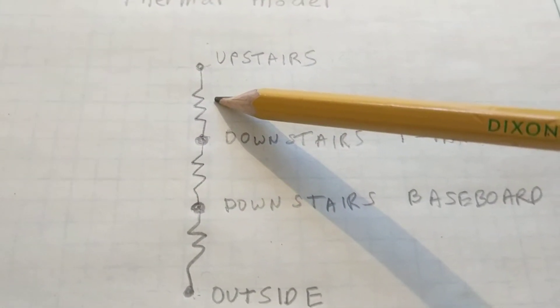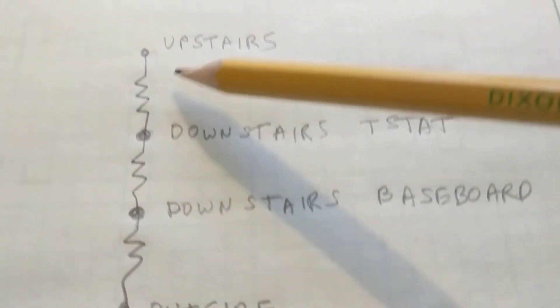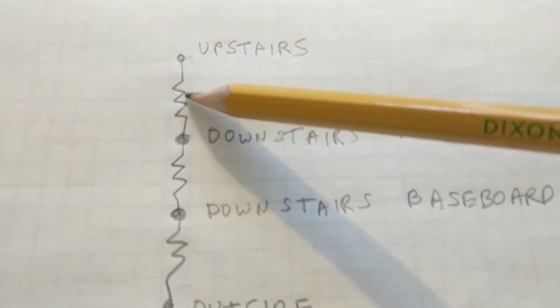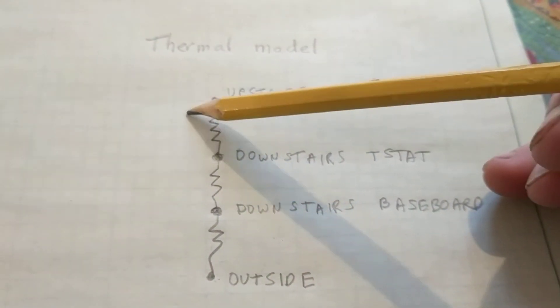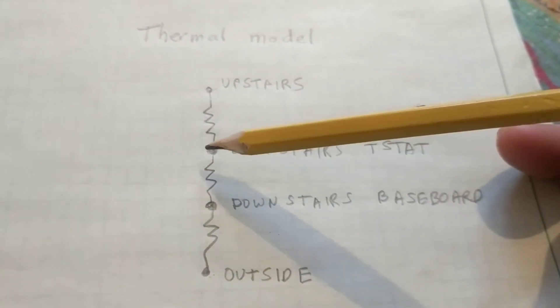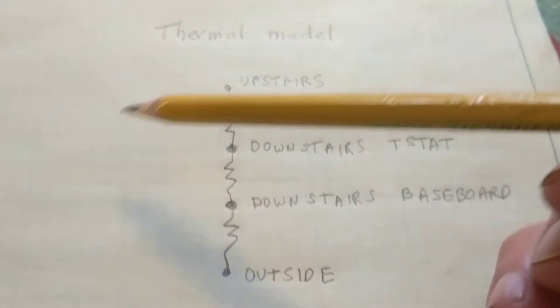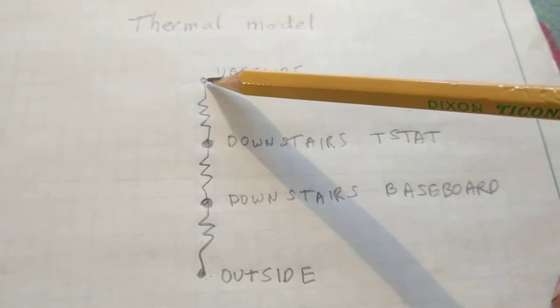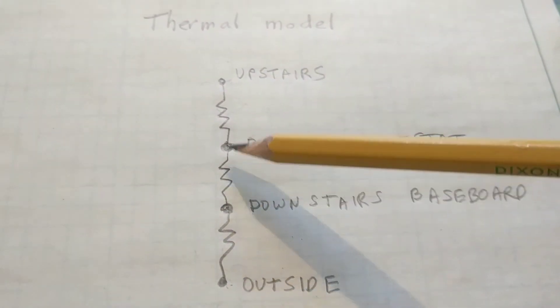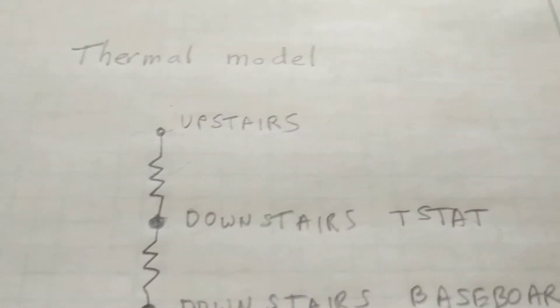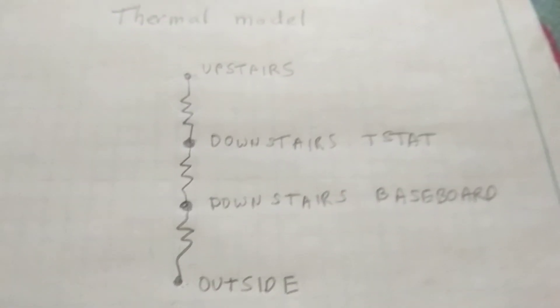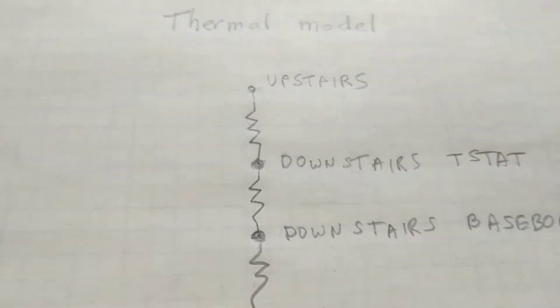I've simplified this using thermal resistors — similar to insulation rated R-19, this is the thermal resistance. The model assumes heat flow is linear: if you double the temperature difference between indoors and outdoors, you double the heat flow. This is a simplified first-order model — not perfect, but it's generally accepted that heat flow is fairly linear for these temperature differences.